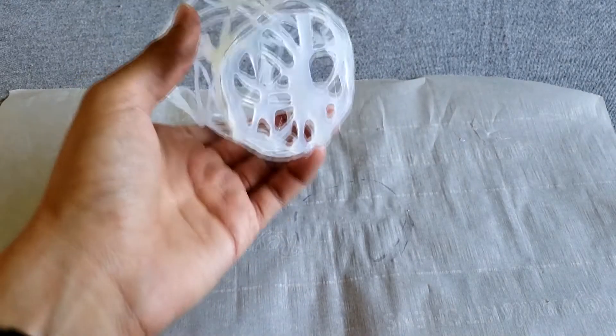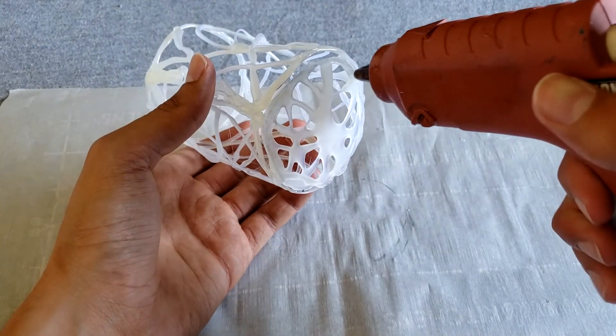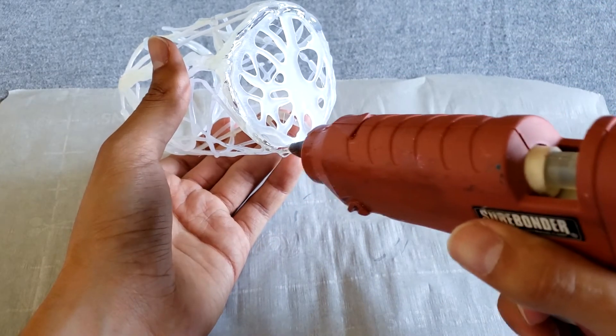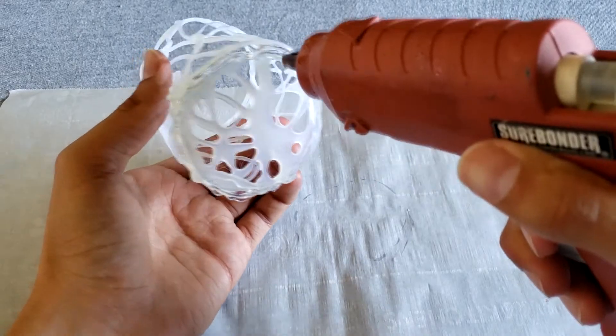This is just an extra step but if you find that your design has a few gaps at the bottom where your candle is going to go and your candle walls, feel free to fill that in with your hot glue gun.